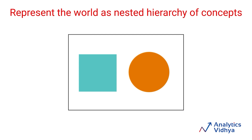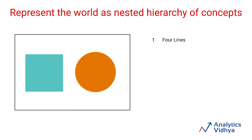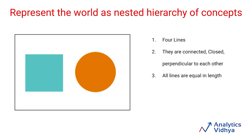One way to do this could be to figure out whether the figure has 4 lines or not. Once we detect whether these 4 lines exist, we check whether they are closed and perpendicular, which is again a simple task. And finally, we check if all 4 lines are equal in length, which is also a simple task. So we have taken the complex concept of identifying a square and broken it down into simpler concepts.